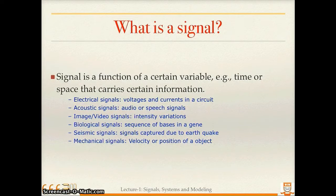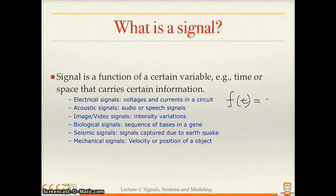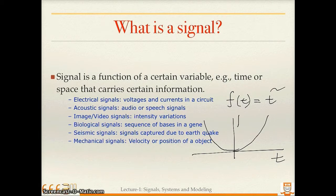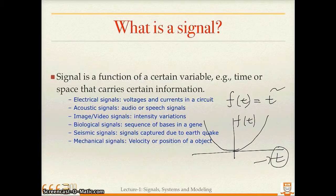So what is a signal? A signal is a function of a certain variable — for example, time or space — that carries certain information. For example, if you define f(t) = t², this is a signal because it carries certain information and the function is a variable of time. You can draw a figure of this. It is a signal because it is a function of a certain variable, in this case time, and it carries the variation of the signal with respect to time.